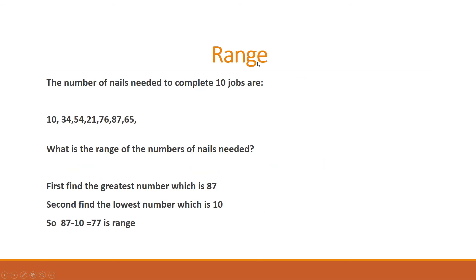We will consider another example of the range. Suppose the number of nails needed to complete 10 jobs are these nails: 10, 34 and so on. These are the numbers. We are calculating range. So first find the greatest number which is 87. Second find the lowest number which is 10. So the range is 87 minus 10 equals 77, which is the range.